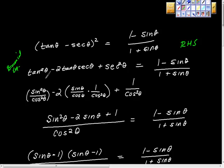So tan θ is sine over cosine, and since it's squared that brings the square. Looking at this, 2 tan θ sec θ — here's my tan θ, here's sec θ. Sorry, that shouldn't be like that — I got ahead of myself.